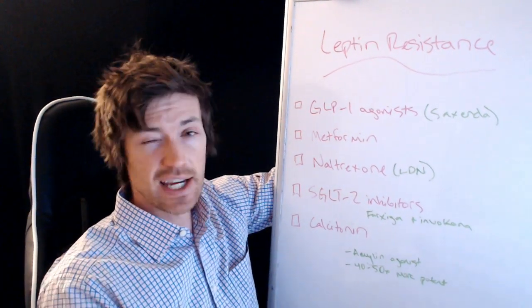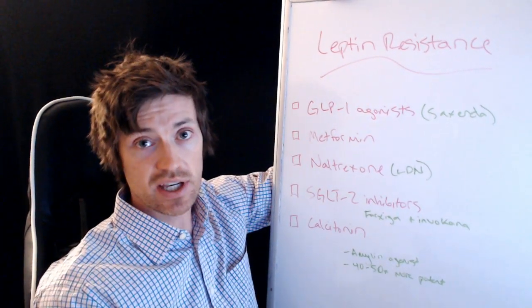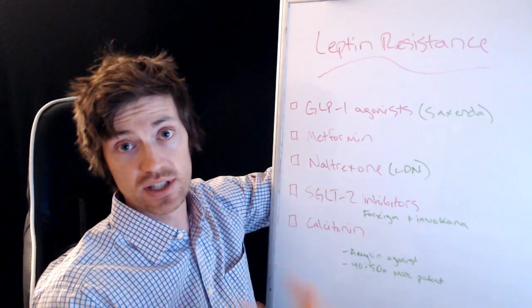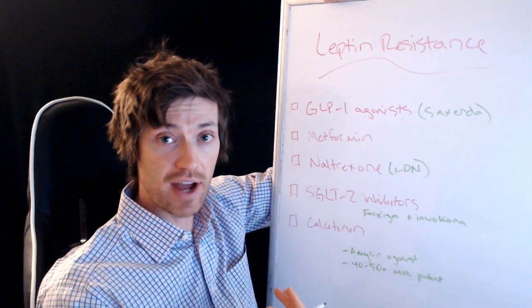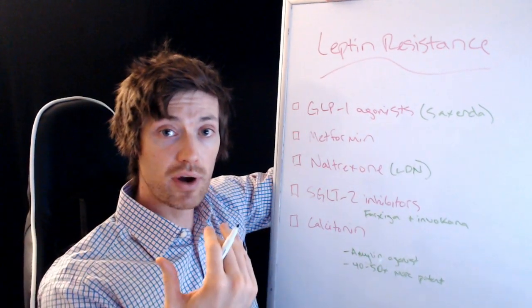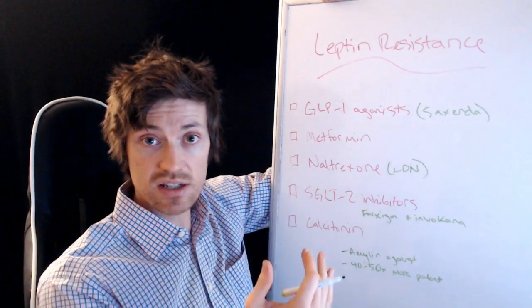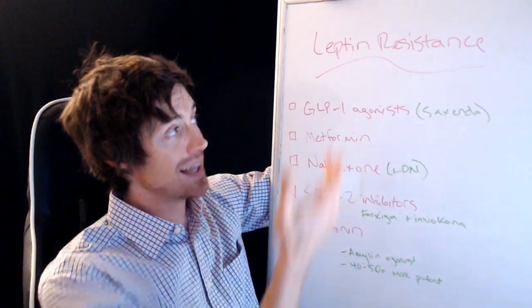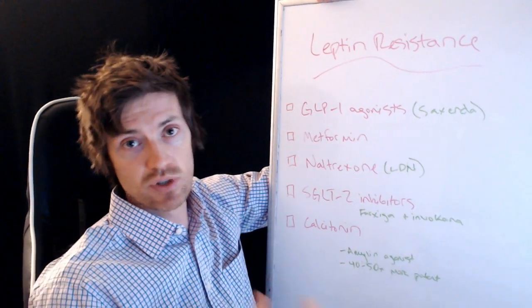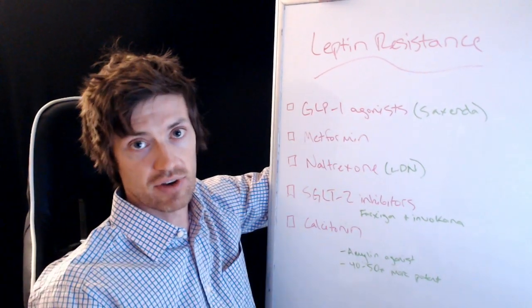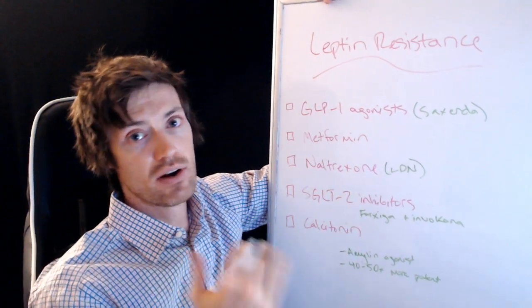Now, before we get into these, it's going to get a little bit technical, but you understand probably if you have leptin resistance, why you need to know this stuff, because it's very difficult to lose weight if you have really severe forms of leptin resistance. If you've never heard of leptin resistance, leptin is a hormone that is secreted by your fat cells, and it's supposed to tell your brain to increase your metabolism to burn more fat. But if people have a lot of extra fat cells, your brain can become resistant to that message, and you get leptin resistance.